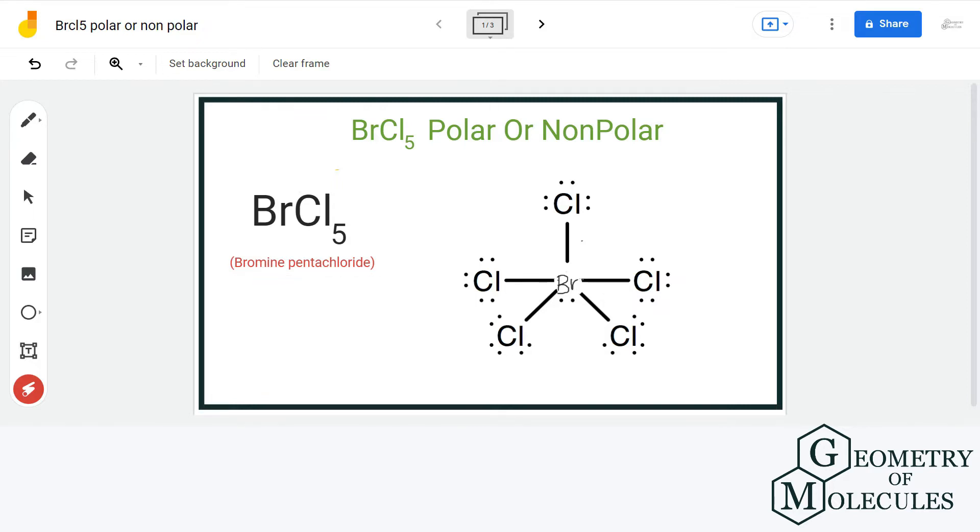To determine its polarity, first we will look at its Lewis structure. So this is the Lewis structure of BrCl5 in which bromine is forming five single bonds with five chlorine atoms, but it also has one lone pair of electrons.